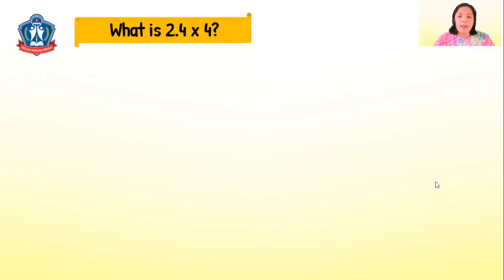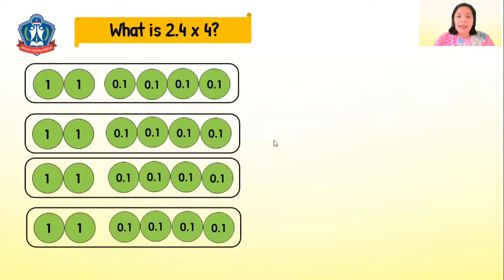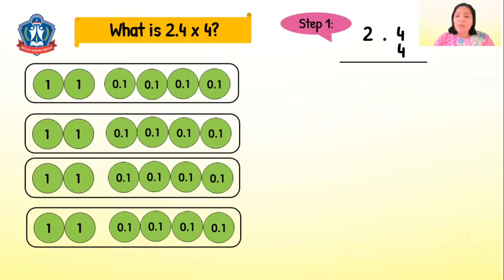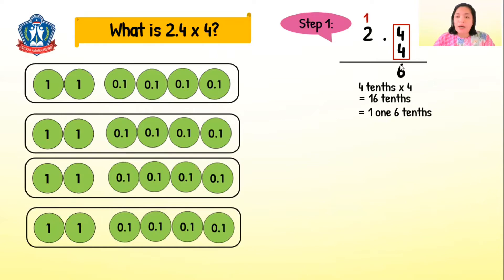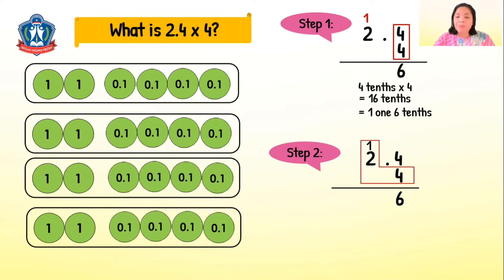Another example: let's multiply 2.4 times 4. That means we need four sets of 2.4. Step one: multiply the tenths — 4 tenths times 4 is 16 tenths. We can regroup 16 tenths into 1 one and 6 tenths, so we carry the 1 and write 6 tenths. Step two: multiply the ones — 2 times 4 is 8, plus the carried 1 is 9 ones. Don't forget the decimal point since 2.4 has one decimal place. Therefore 2.4 times 4 equals 9.6.